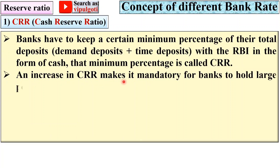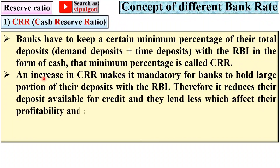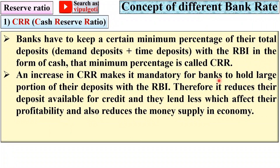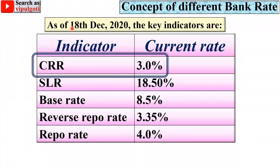An increase in CRR makes it mandatory for banks to hold a large portion of their deposits — in terms of demand deposits and time deposits — with the RBI. Therefore, it reduces the deposits available for credit. Banks lend less, which affects their profitability and reduces the money supply in the economy. The main aim of CRR is to avoid any shortage of money in meeting the demand of depositors. As of 18th December 2020, the CRR in India is 3.0%.